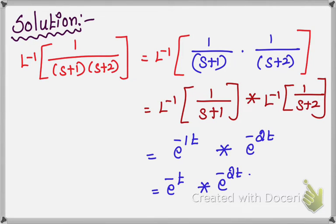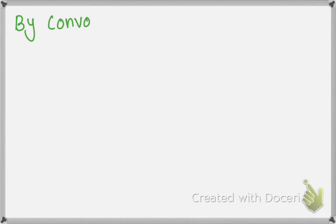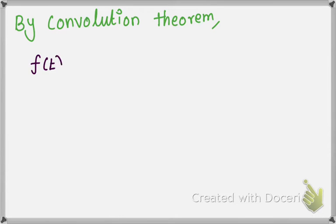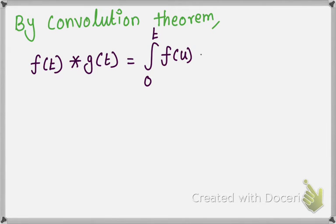Now, you know the formula of convolution. By convolution theorem: f(t) star g(t) equals integral from 0 to t of f(u) · g(t minus u) du.